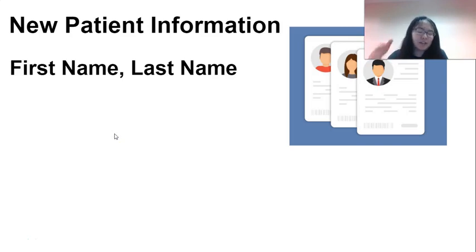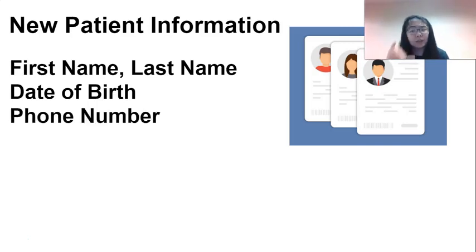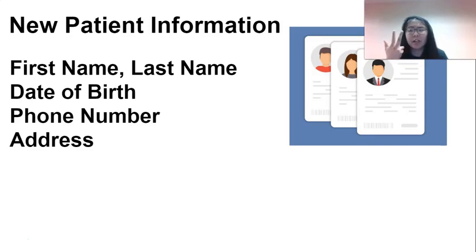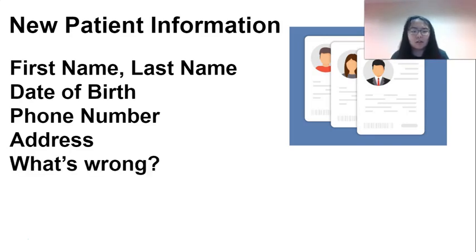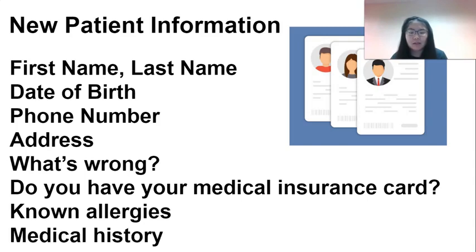To review the new patient information: first name, last name — know how to spell it; date of birth — your birthday; phone number with the area code; your street address; your email address — your contact information; being able to tell them what's wrong; your medical insurance; allergies you know about; and your medical history. That is new patient information.